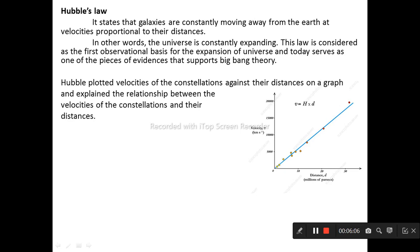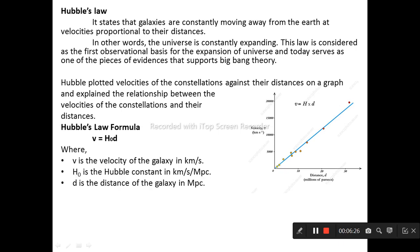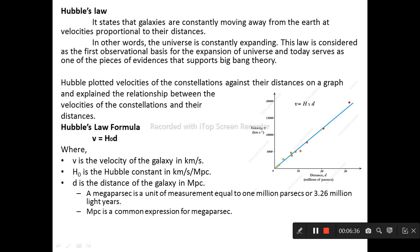Hubble plotted velocity of constellations against their distance on a graph and explained the relationship between the velocity of the constellations and their distances. This relation is represented by the equation v = Hd, which is also known as Hubble's law, where v is the velocity of galaxy in km/s, H is the Hubble constant in km/s per megaparsec, d is the distance of the galaxy in megaparsec. A megaparsec is a unit of measurement equal to one million parsecs or 3.26 million light years. Mpc is a common expression for megaparsec.